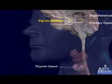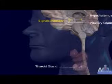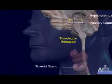The pituitary in turn releases thyrotropin, which stimulates the thyroid gland to release thyroid hormone into the bloodstream.